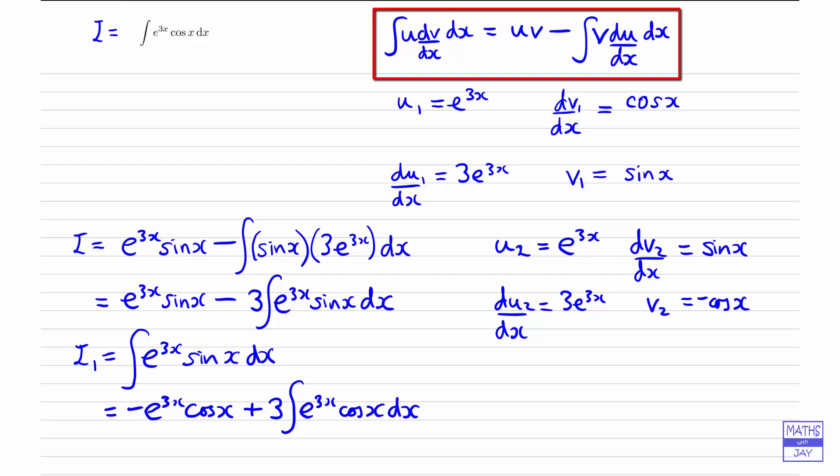So when you get to this stage, it can be quite disheartening, because it's like we've gone round in a complete circle and ended up with the integral we started with. But this is actually what we want at this stage. What we can do now is leave the first bit as it is. It's not got an integral in it. And then, remember we gave a name to the original integral. Well, we can see that that is therefore plus 3i at the end, because i is the integral of e to the 3x cosx.